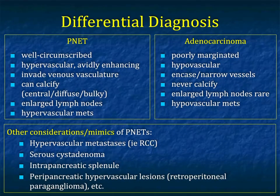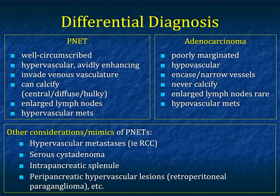When you talk about the differential diagnosis of neuroendocrine tumors, it always makes you think of adenocarcinoma. Adenocarcinoma is typically poorly marginated, but can be better marginated when small. It's hypovascular and encases vessels on both the arterial and venous side. Adenocarcinomas never calcify — you can see calcification in pancreatic cancer only if it arises in a zone of chronic pancreatitis. Enlarged lymph nodes are not rare, but most nodes will be small.